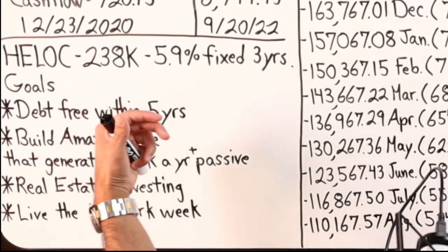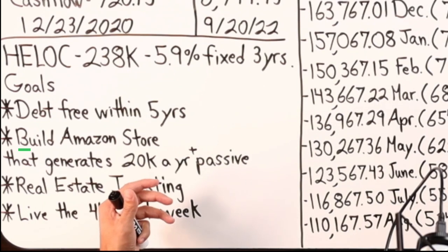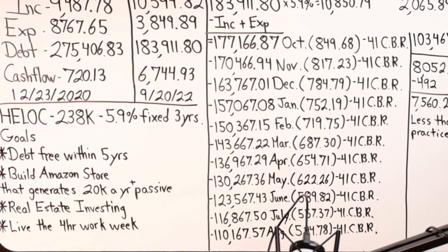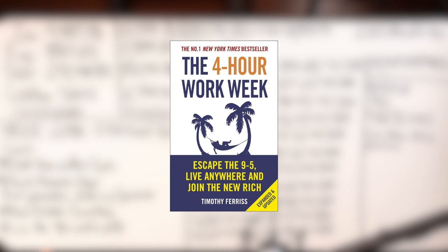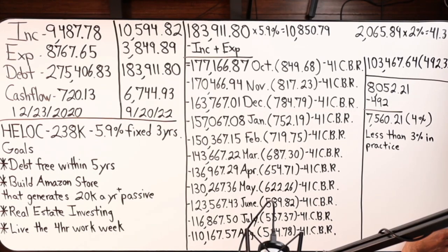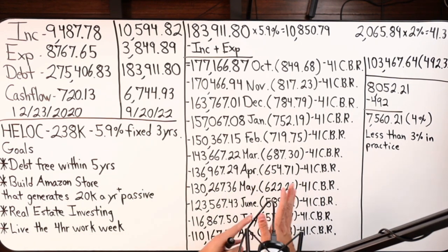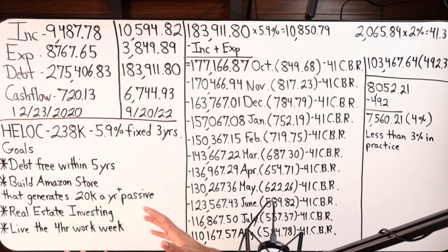With a first lien HELOC they're automatically sending their paychecks into the line, automatically expenses are coming out. This thing's on autoplay and their goal in addition to getting out of debt on that tool itself, but also building the Amazon store that generates at least $20,000 a year passively. They want to get into real estate investing as well and they want to live the four hour work week. I think there's a book called the four hour work week by Tim Ferriss.